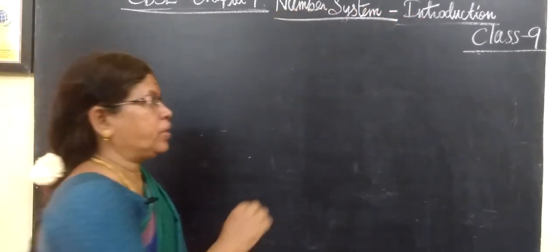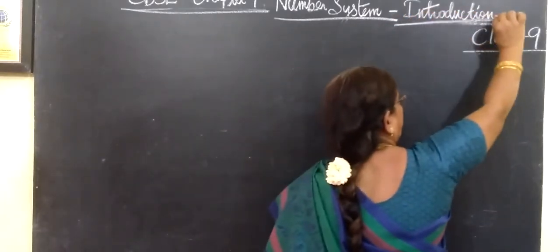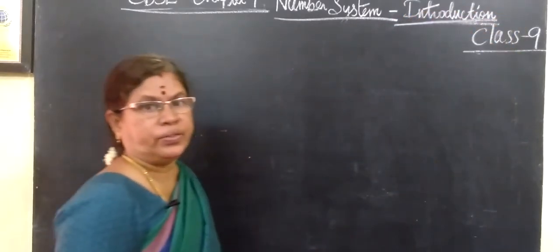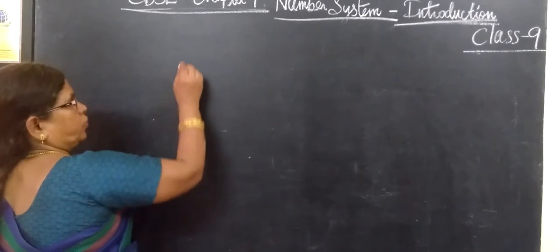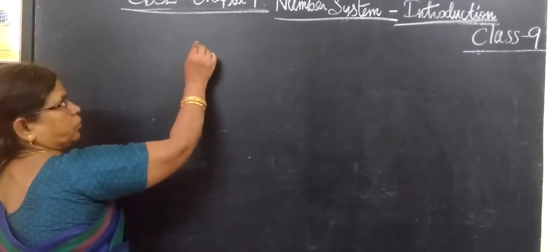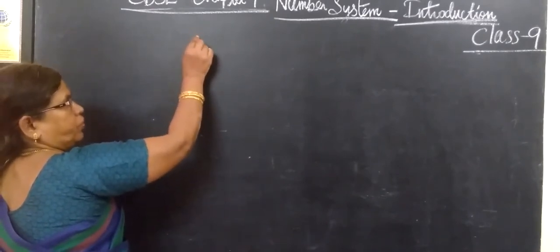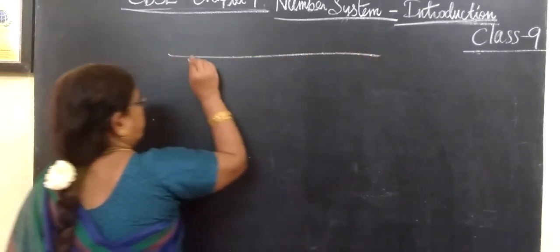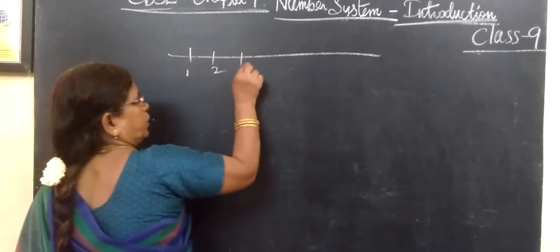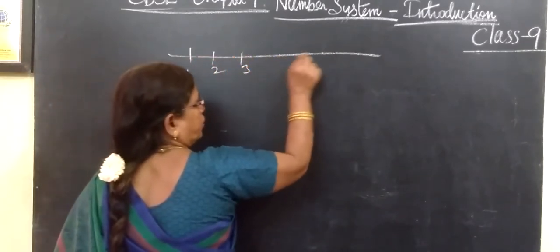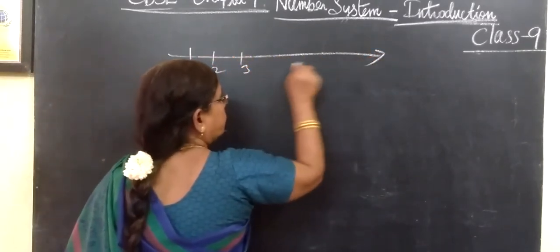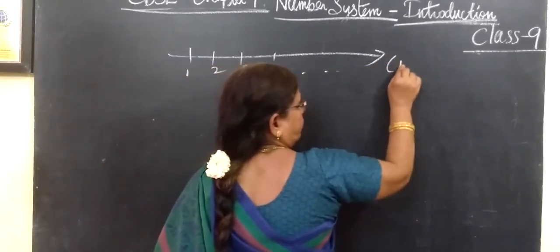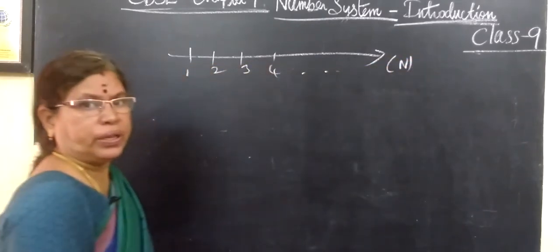This is just for recalling what you have studied in 8th standard. Natural numbers start from the number line: 1, 2, 3, etc. So this is the set of natural numbers.